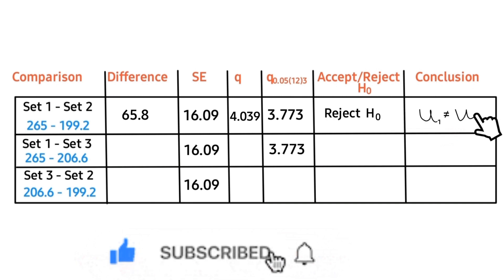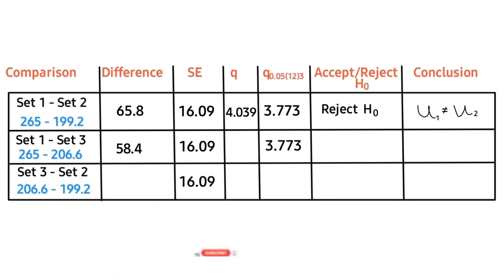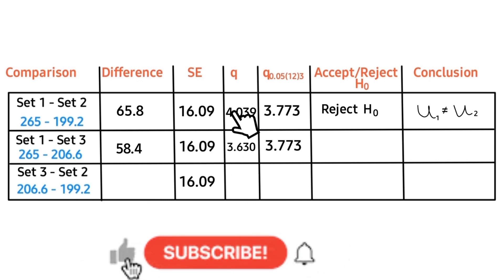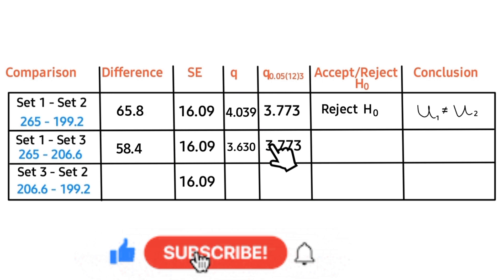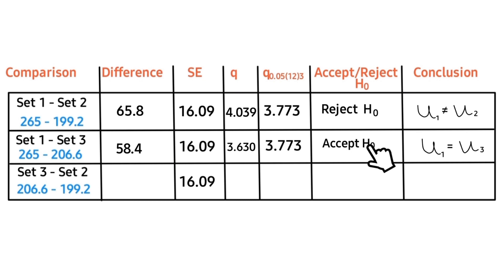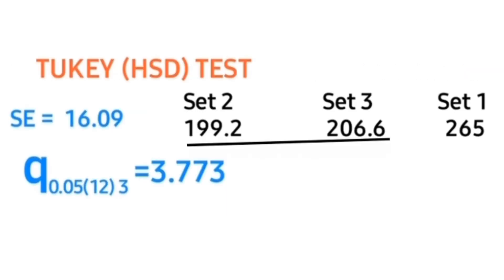Comparing Set 1 with Set 3: Set 1 value minus Set 3 value gives the mean difference, which divided by the standard error gives the calculated q value. Comparing these two values, the critical q is greater than the calculated q, so we accept the null hypothesis. We conclude that the mean for Set 1 is equal to the mean for Set 3.